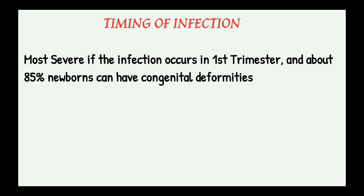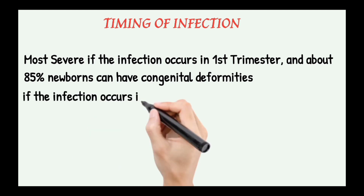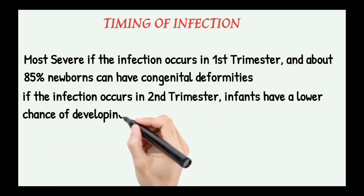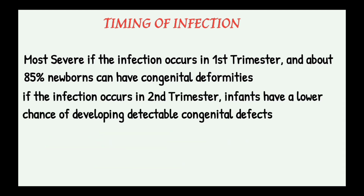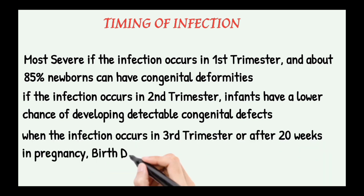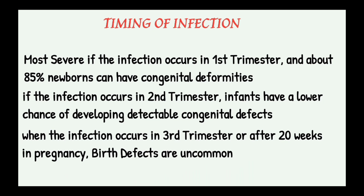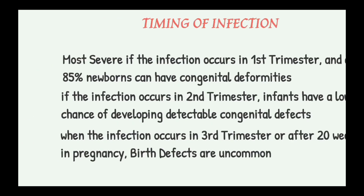If the infection occurs in the first trimester, there is a high probability that the fetus will have congenital deformities. If it occurs in the second trimester, the chance is lower compared to the first trimester. When the infection occurs in the third trimester or after 20 weeks of pregnancy, birth defects are uncommon.